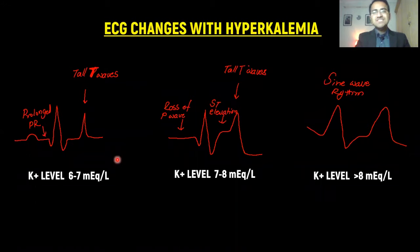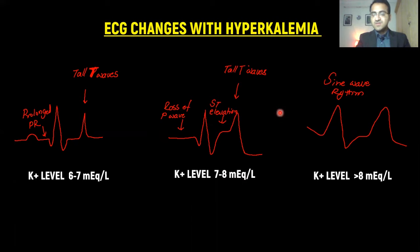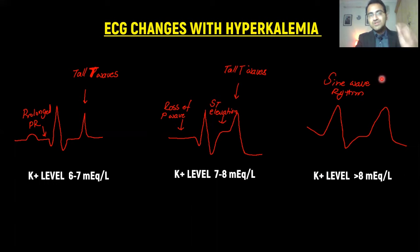When potassium levels are 6 to 7 mEq/L, ECG shows a prolonged PR interval and tall T-waves. When levels are 7 to 8 mEq/L, there is loss of the P-wave and ST segment elevation with tall T-waves. When potassium exceeds 8 mEq/L, arrhythmias begin to appear and a sine wave rhythm develops — very close to a fatal arrhythmia.